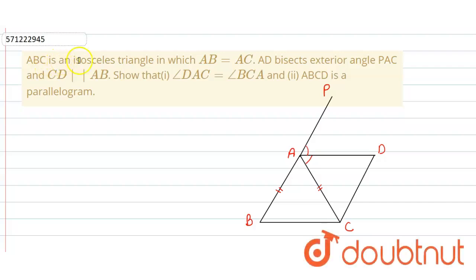In the given question, ABC is an isosceles triangle in which AB is equal to AC and AD is a bisector of exterior angle PAC and CD is parallel to AB. Then we have to show that angle DAC is equal to angle BCA and ABCD is a parallelogram.